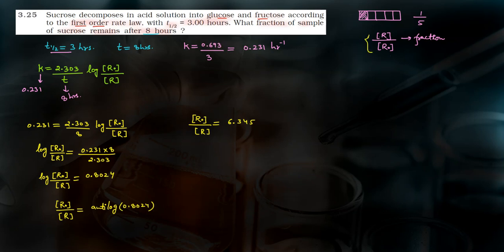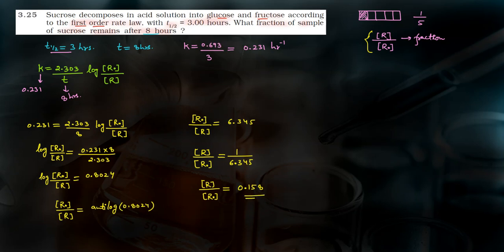हमें चाहिए था [R]/[R]₀, यानी [R]₀/[R] का reciprocal। तो [R]/[R]₀ equals to 1 divided by 6.345, equals to 0.158. This is the fraction of sample of sucrose remaining after 8 hours. So this is the answer.